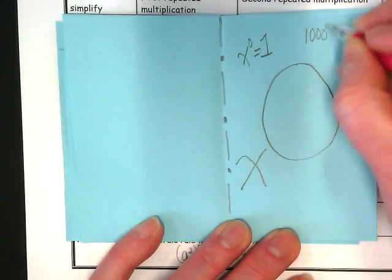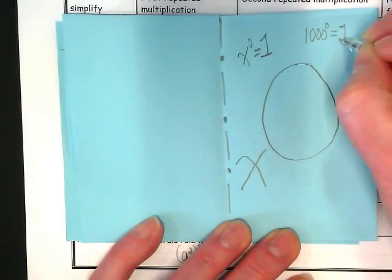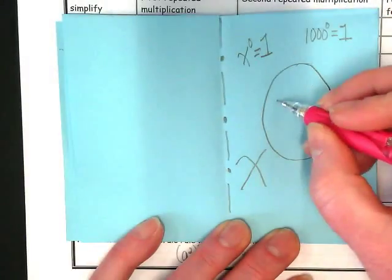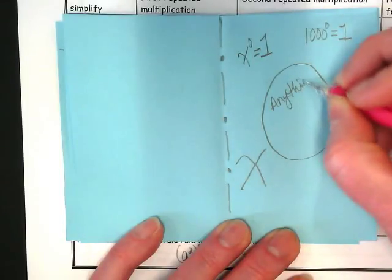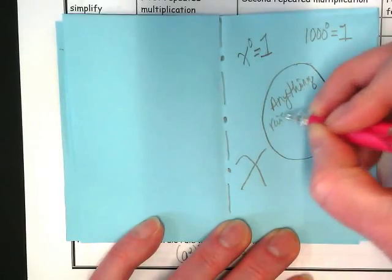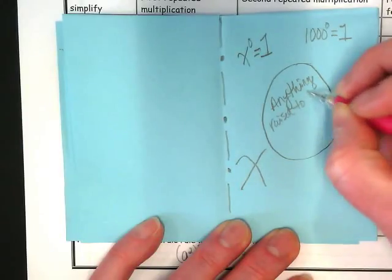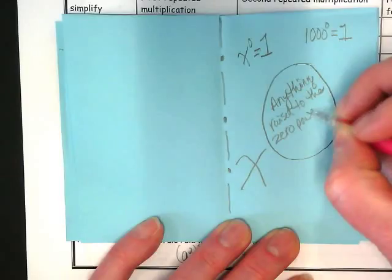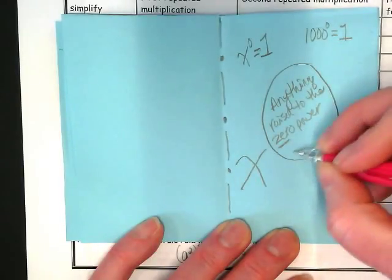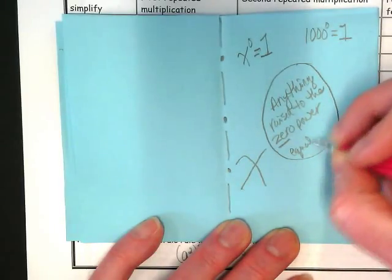So if I have 1,000 to the zero power, it's equal to one. Inside your zero, I want you to put anything raised to the zero power. 1,000 to the zero power equals 1.